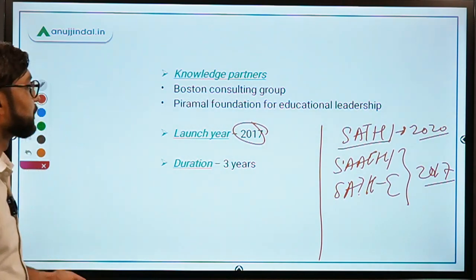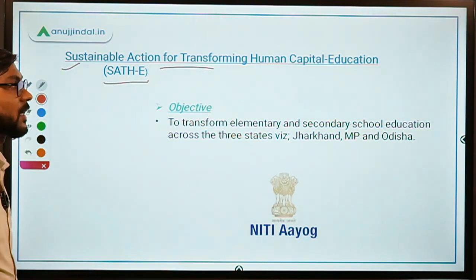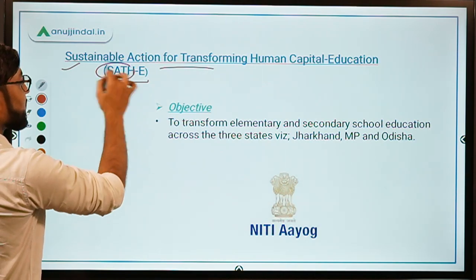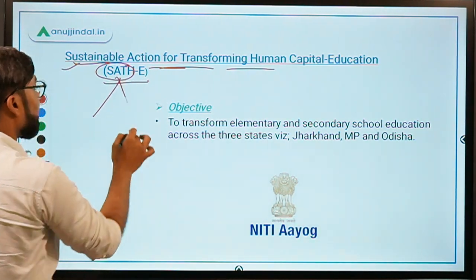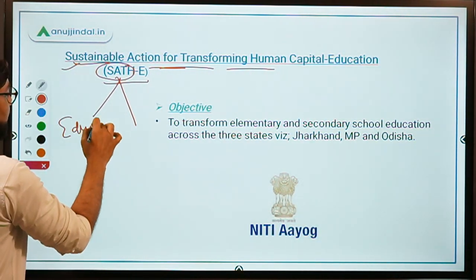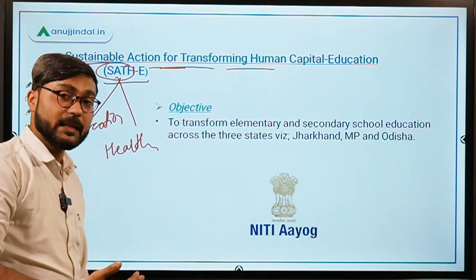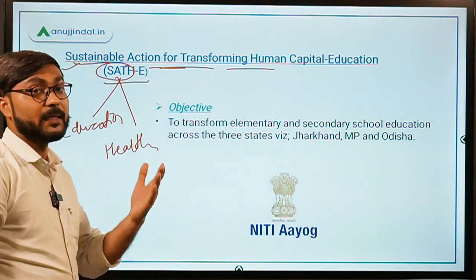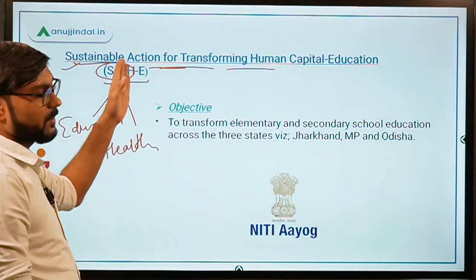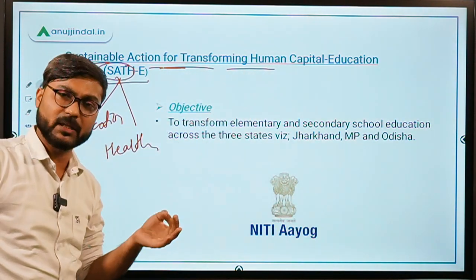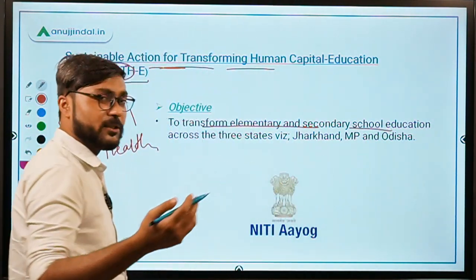The third SATHI stands for Sustainable Action for Transforming Human Capital — Education. This SATHI program covers two things: education and health. For education it is SATHI-E, and for health it is SATHI. Here we are discussing SATHI-E because we are talking about education — specifically to transform elementary and secondary school education.